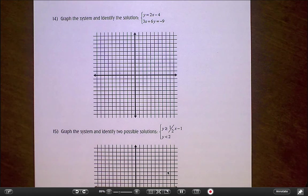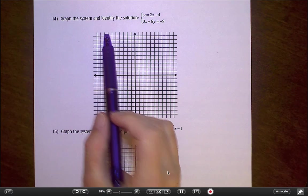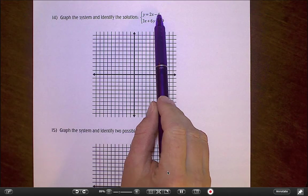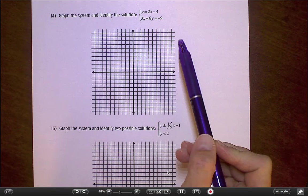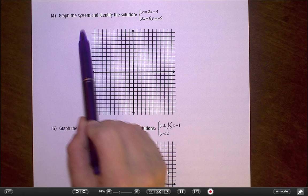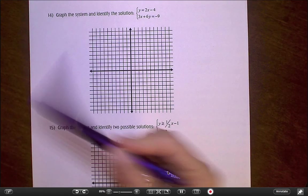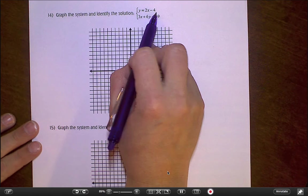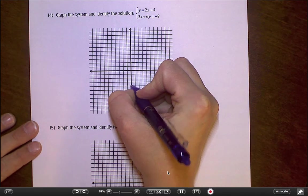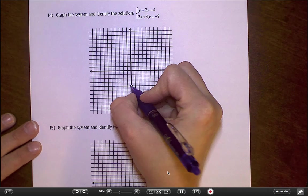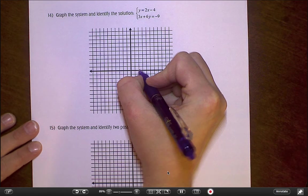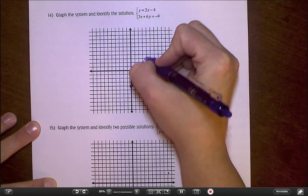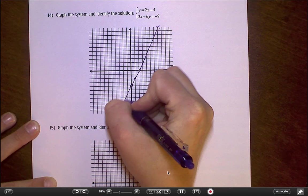Let's carry on here with number 14. Number 14 has given us a system and they're asking us to find the solution by graphing. I do want to point out that the goal here is to graph the system and use the graph to find the solution. Sometimes I find that people want to use substitution or elimination to find the answer, and that is a valid way. But given the fact that this question is specifically saying we have to graph it, we may as well use the graph to answer the question. So I'm going to start with that first one. That first one's in slope intercept form, y equals 2x minus 4. So I'm going down to negative 4, and then my slope is 2 over 1. So up 2 and over 1.